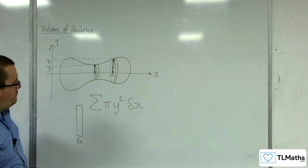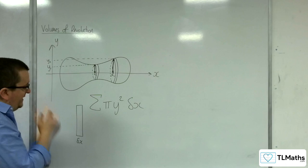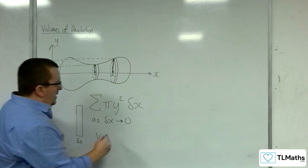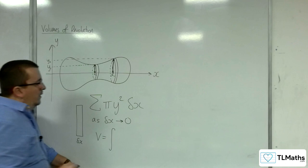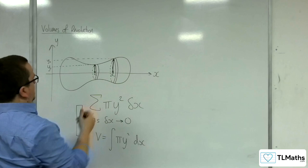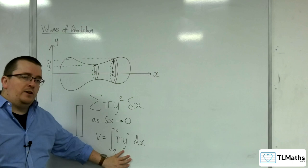Now, the idea is that if I make this strip infinitesimally thin, and I let delta x tend to 0, then the volume of the butternut squash would become, instead of a summation, it would become an integral of pi y squared dx. The delta x would go to dx, and if you are integrating between a to b, then this would be the volume of my shape.